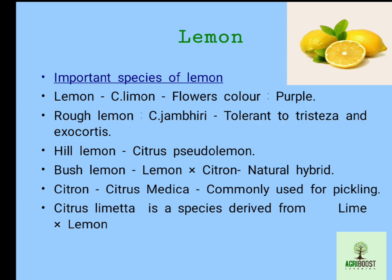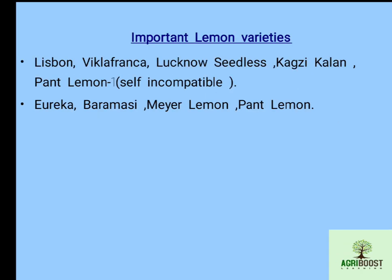The next important species is hill lemon, scientific name Citrus pseudolimon. Bush lemon is also an important species — it is a natural hybrid, a cross between lemon and citron. The scientific name of citron is Citrus medica, commonly used for pickling. The last important species is Citrus limetta, derived from the cross between lime and lemon.